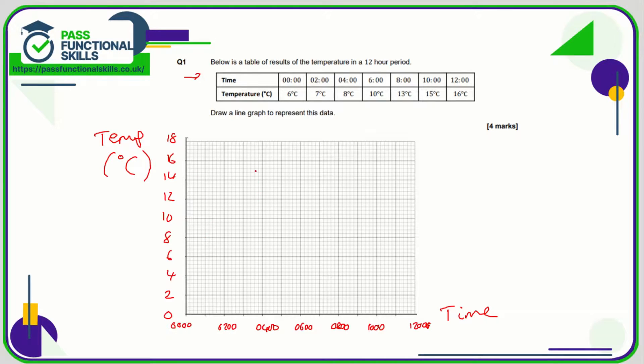Now all we need to do is plot seven points. So at midnight it's 6 degrees, mark it with an x. 2 a.m. is 7, so 7 is halfway between 6 and 8, I'll put an x there. 4 a.m. is 8, 6 a.m. is 10.